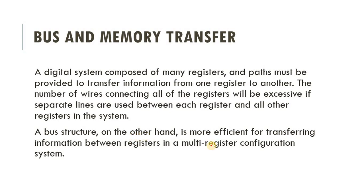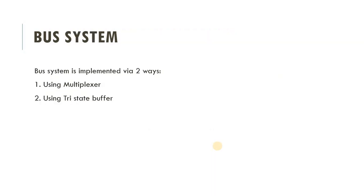To overcome this issue, the bus system was introduced to transfer data with less expense. The bus structure is more efficient for transferring information between registers in a multi-register configuration system. The disadvantage of direct register connection is that it requires connections between each and every bit and each and every register, making it very complex and expensive. That is why the bus structure was introduced.